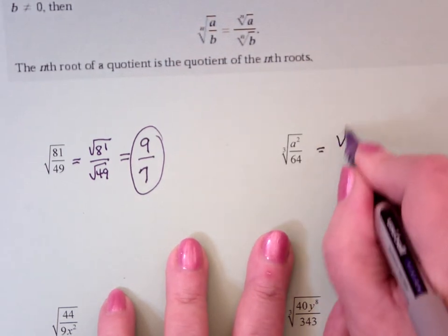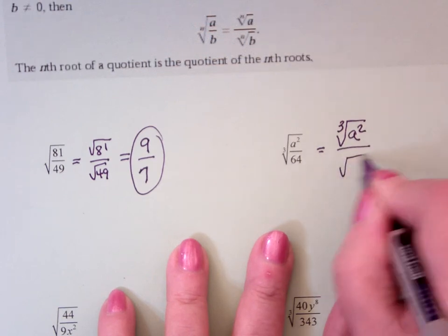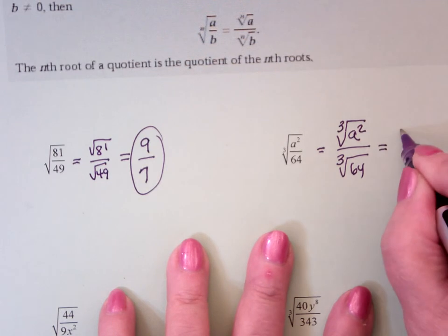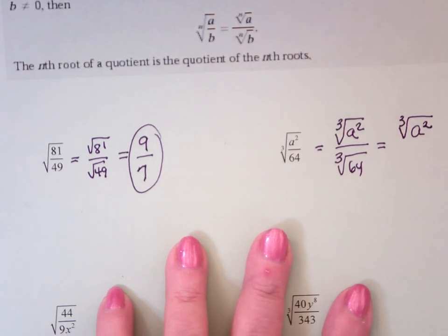This is the cube root of a squared over the cube root of 64. Well, a squared, there's not enough a's to do a cube root. And what's the cube root of 64? Four.